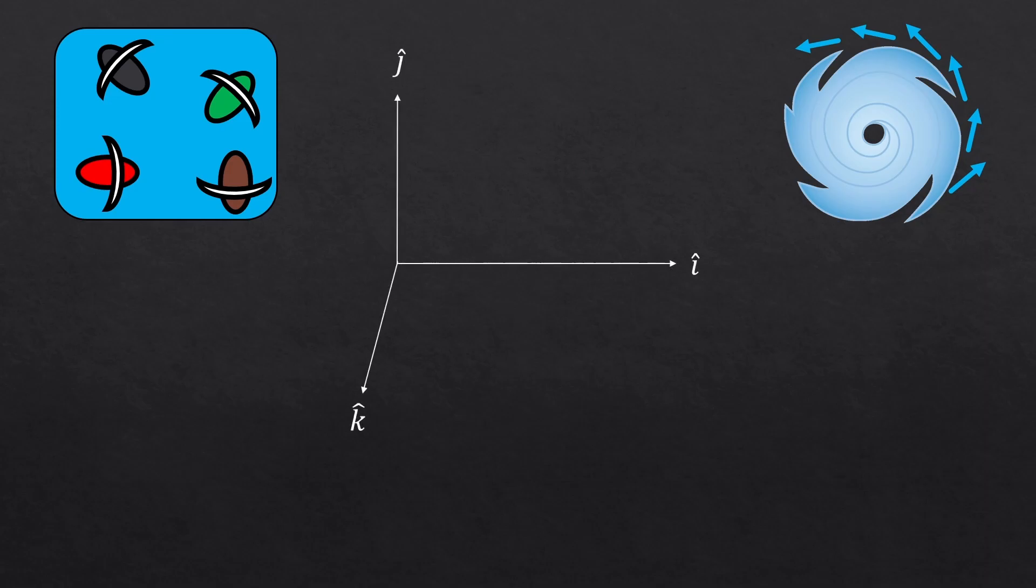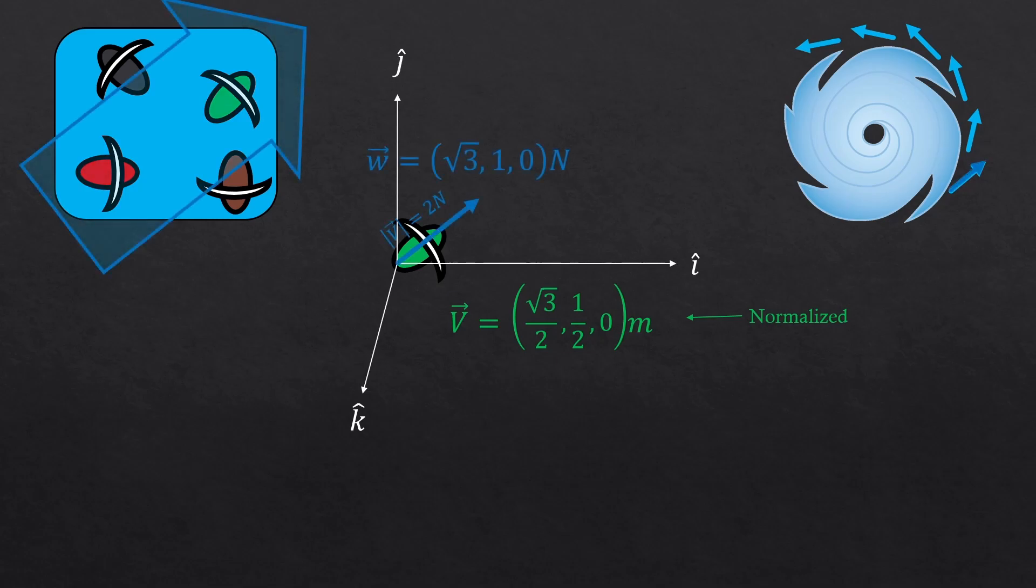Now, how about with the green sailboat? I wanted to compare with the red boat so I normalized the vector so it goes 1 meter at a time as well. And this boat is moving in the same direction as the wind.